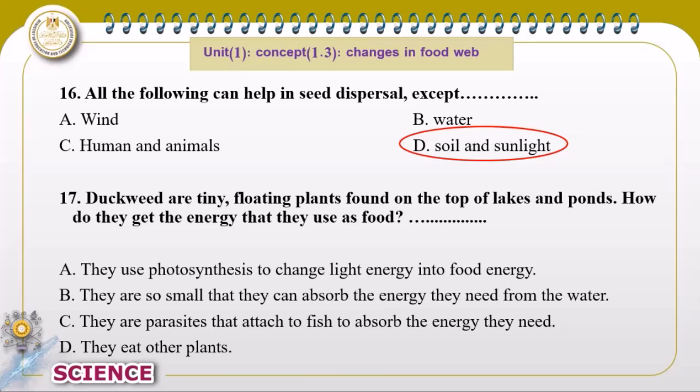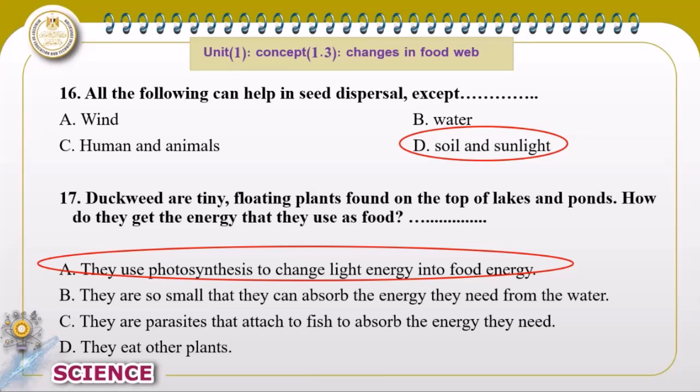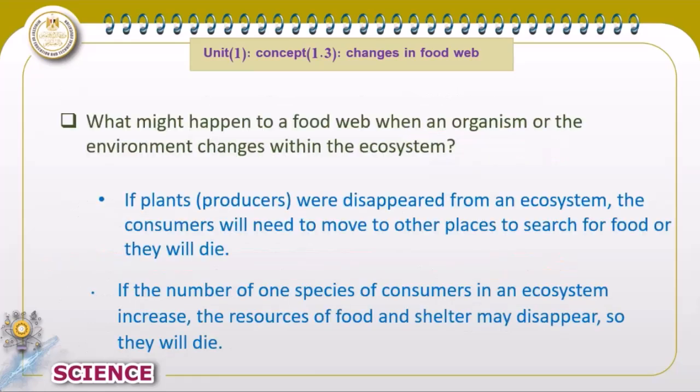Duckweed is a floating plant found on the top of lakes and ponds. How do they get energy? Since it is a plant found at the top of the lake, it uses photosynthesis to convert light energy into chemical energy stored in its body. That completes the revision for concept 1.2.